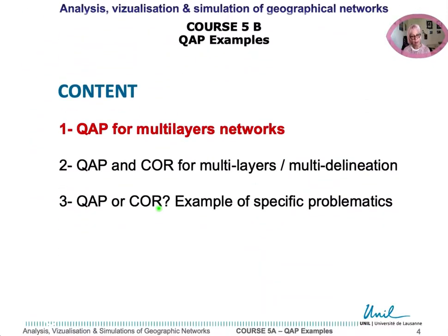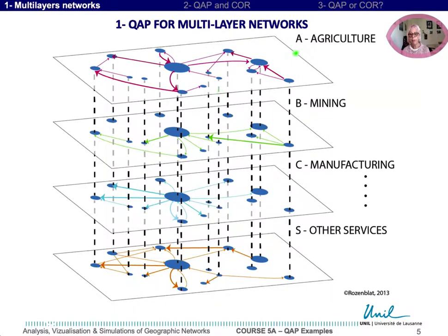In the first example, we have 20 layers representing the weighted networks — firms' ownership linkages of cities — by 20 different categories of activities, which are represented here by NACE letters. The aim is to underline the relation between activity networks and to determine which activity network is the most central in studying the network of cities. The set of cities is the same in every layer, even if in some networks some cities are not linked with the others. However, it would be difficult to use classical correlation tests, as linkages between cities are not independent of each other in every layer.